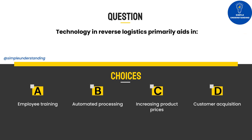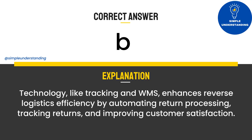Question 10: Technology in reverse logistics primarily aids in: A. Employee training. B. Automated processing. C. Increasing product prices. D. Customer acquisition. Answer: B. Technology like tracking software and WMS enhances reverse logistics efficiency by automating return processing, tracking returns, and improving customer satisfaction.